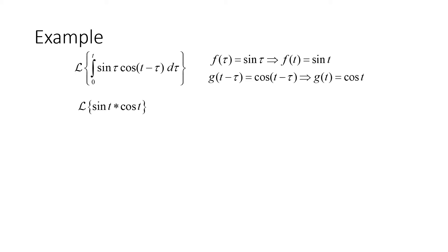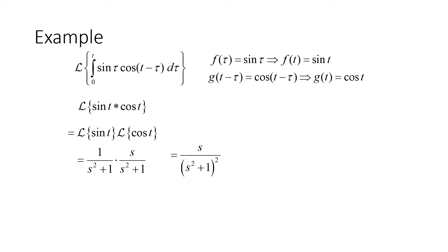Applying our convolution theorem, we take the Laplace transform of sine of t and multiply it by the Laplace transform of cosine of t. That gives us 1 over s squared plus 1 times s over s squared plus 1, which combines to give us s over s squared plus 1 quantity squared. That is the Laplace transform we're looking for.